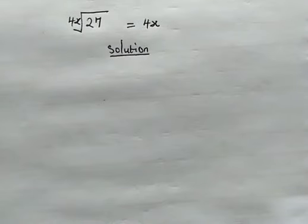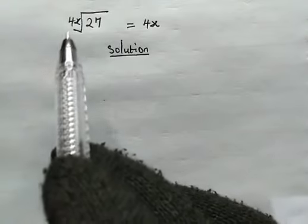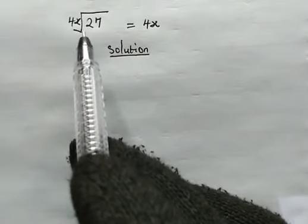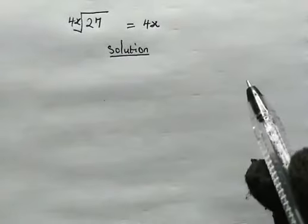Hello goody viewers, welcome back once again. Let's find a solution to this given equation. We have here 4x root of 27, this is equal to 4x.